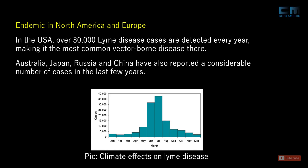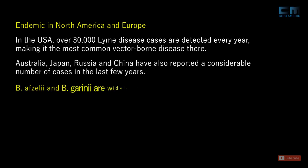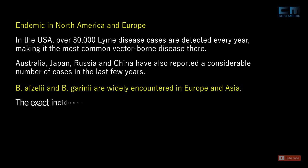While Borrelia burgdorferi remains the predominant species to cause Lyme disease in the northern and eastern part of the USA, two additional species — Borrelia afzelii and Borrelia garinii — are widely encountered in Europe and Asia. It is not possible to pinpoint the exact incidence of the disease because of the wide range of presentation and low sensitivity of the serological tests in the earlier stages.